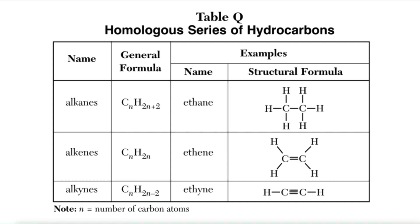So if we look at table Q on our reference table, you will see this general formula CnH2n plus 2 next to the word alkane. We will also be talking about alkenes and alkynes, but not in this video. We're just focusing on alkanes today.